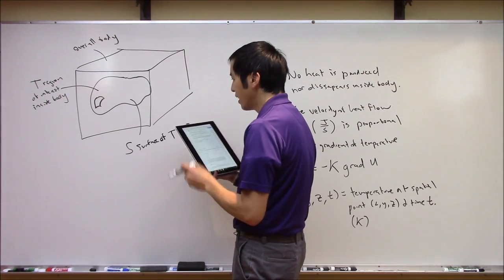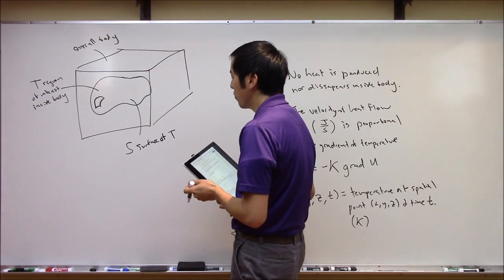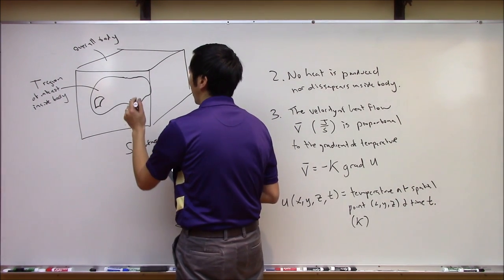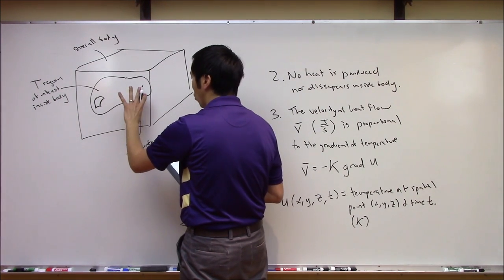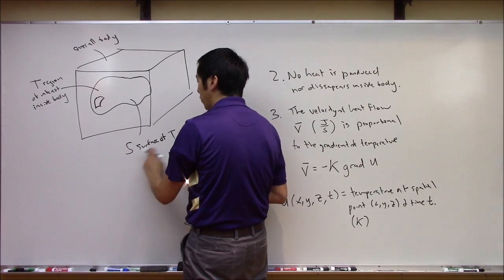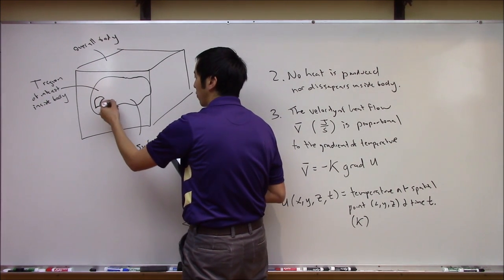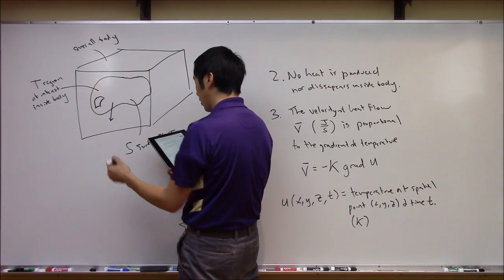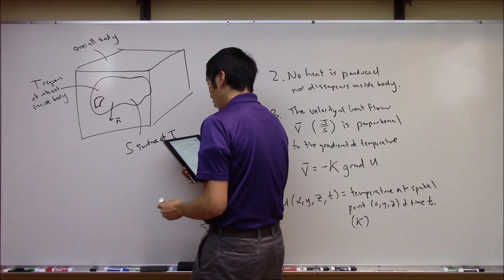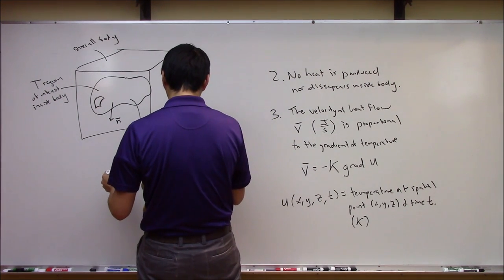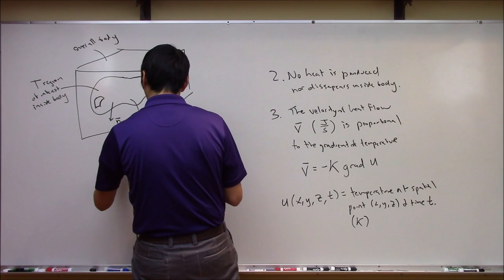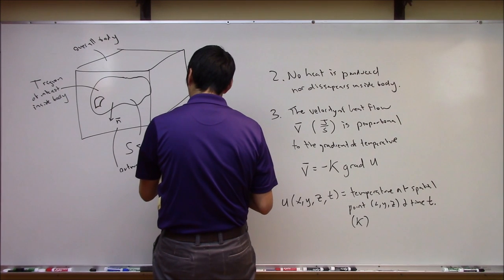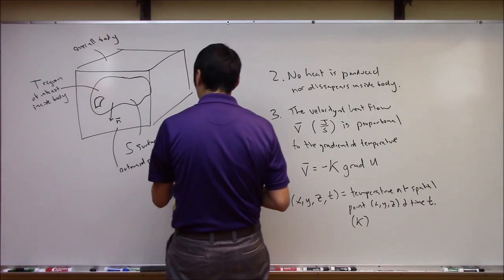The last thing we want to define is an outward-facing normal for this surface. So from the surface S of T, we can get an outward-pointing normal vector at any point on the surface. We'll call that little n-bar — our outward-pointing normal vector.